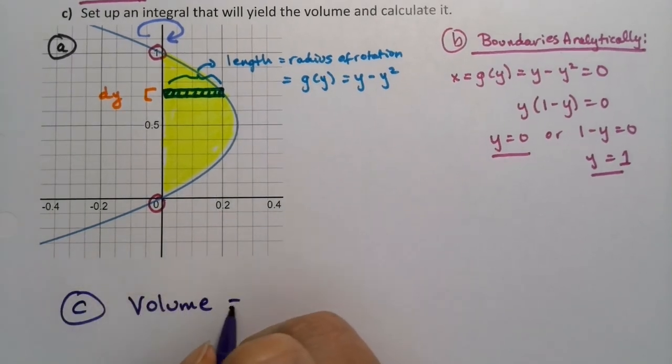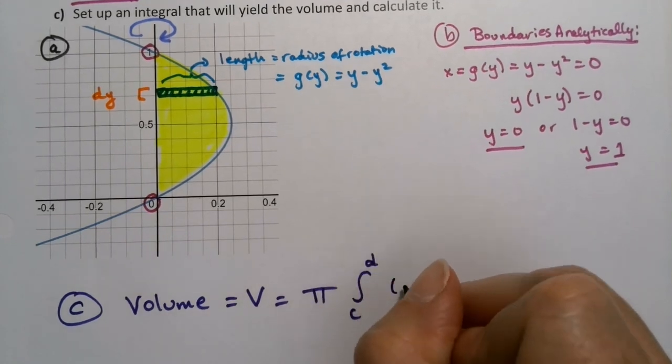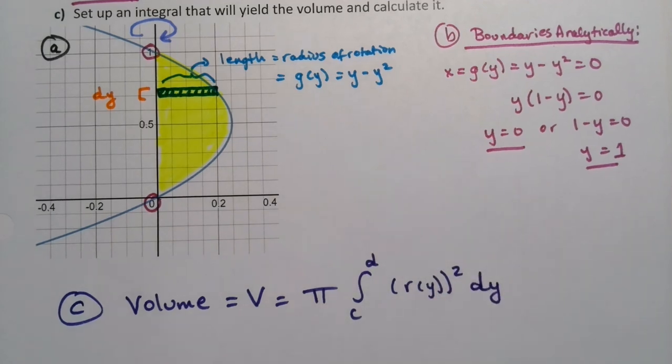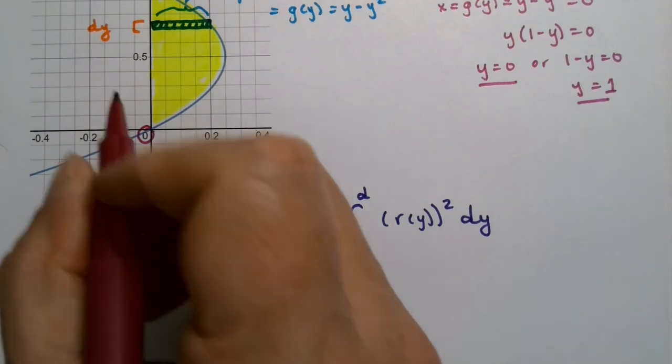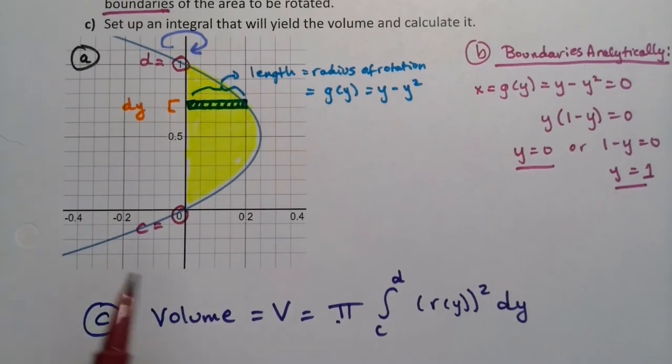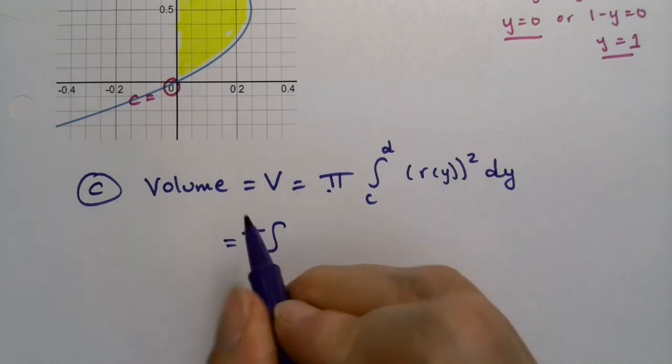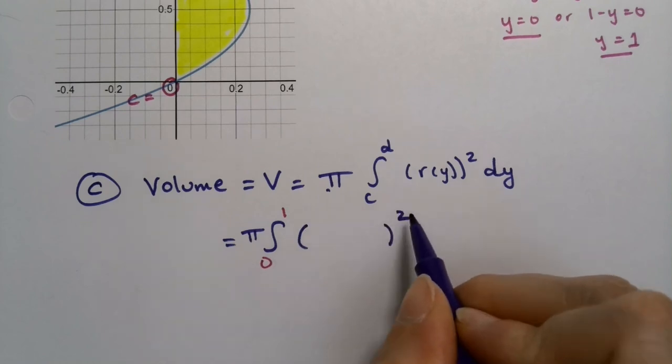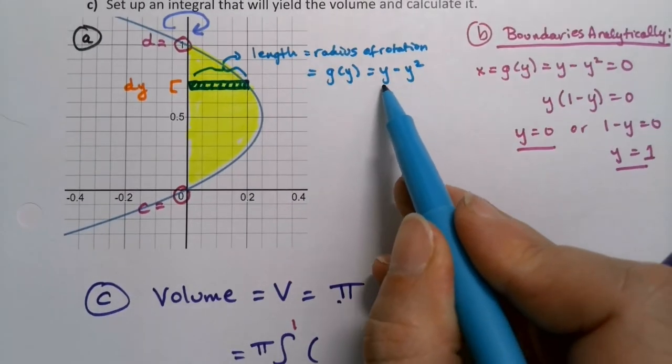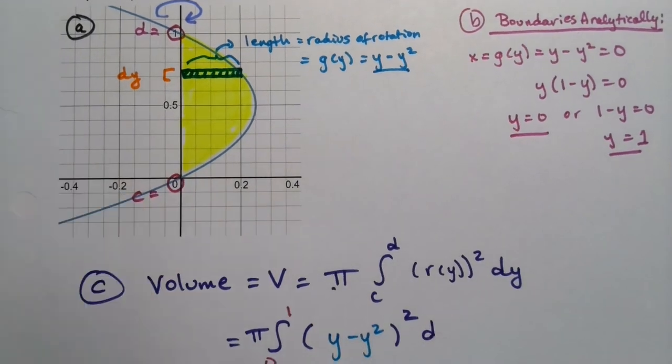The volume would be π ∫ from c to d of r(y) squared dy. It's π r squared times the thickness. C is zero, d is one. That would be the integral from, well I'm just going to put π on front, zero to one. And r(y) is g(y), which is y minus y squared. So that's (y - y²), I'm going to square that and multiply it by the thickness, which is dy.